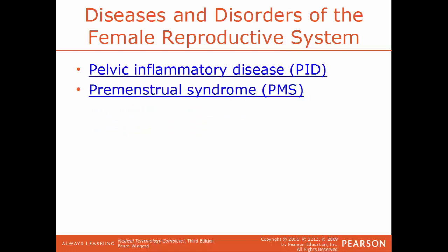PID, pelvic inflammatory disease, is an inflammation of the genital tract of the female, usually caused by the spread of bacteria from the vagina to the uterus, fallopian tubes, and ovaries. PMS, premenstrual syndrome, covers a large number of symptoms that some women experience just before the beginning of menstruation — symptoms could include acne, tender breasts, bloating, mood changes, or irritability.